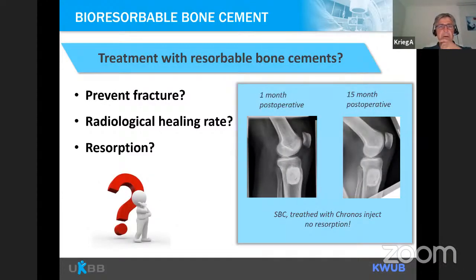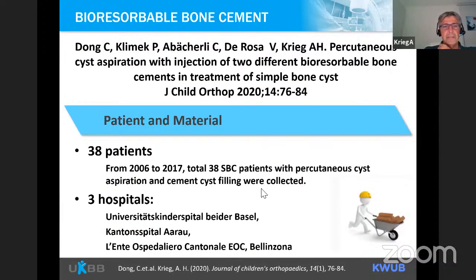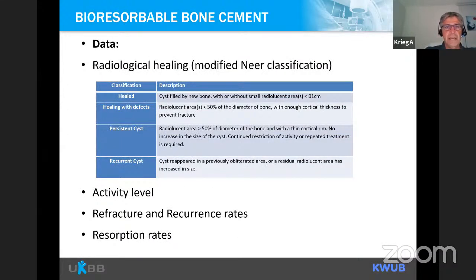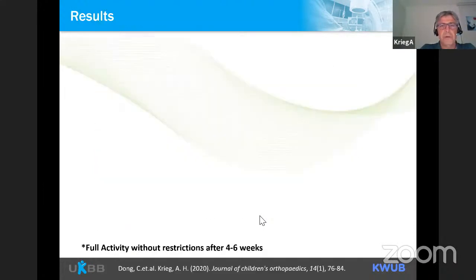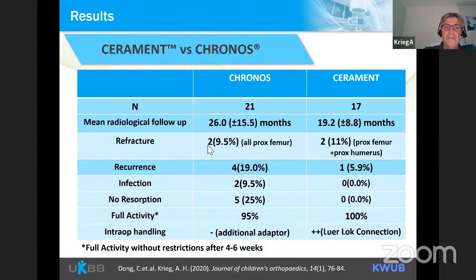We wondered how we can prevent fractures with resorbable bone cement and what the resorption looks like. In our study involving three Swiss clinics and 38 patients, we analyzed radiological healing, activity level, re-fracture rate, recurrence rate, and resorption rates. We found re-fracture rates in both cement types, all in the proximal femur. Initially I thought cement was stable enough without additional fixation, but after the second fracture I became wiser and added stabilization. Recurrence rate was slightly higher in some groups regardless of cement type.